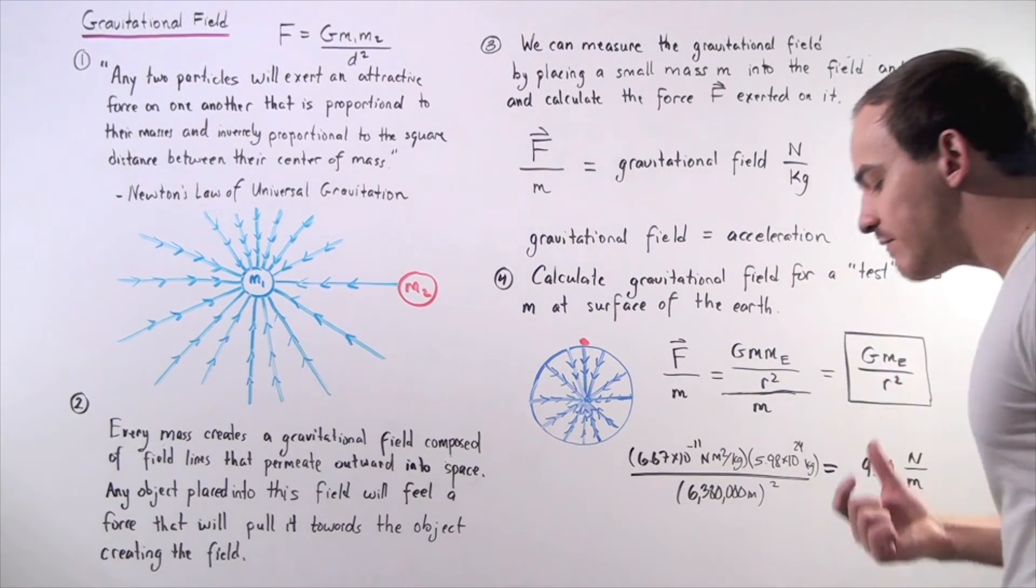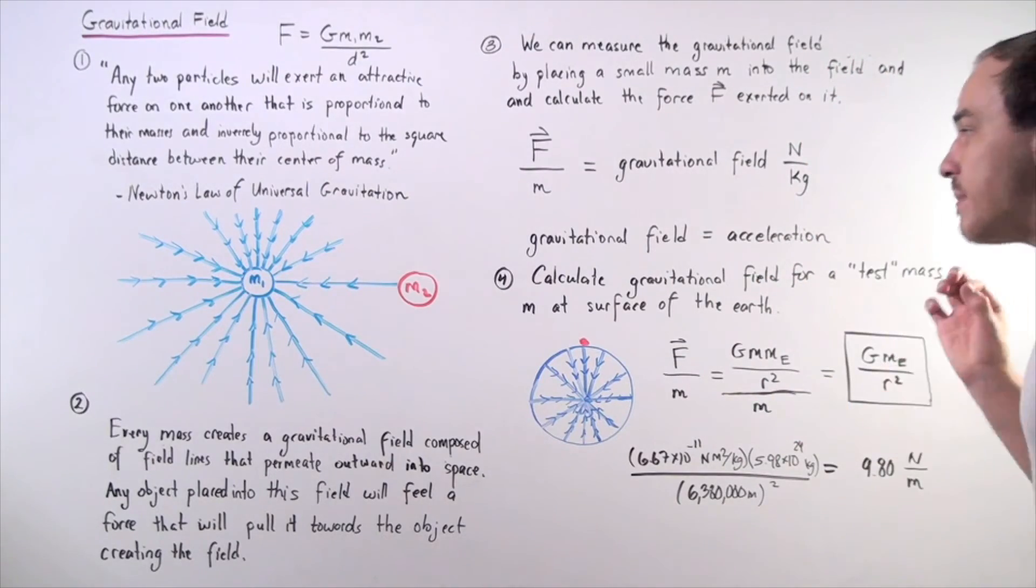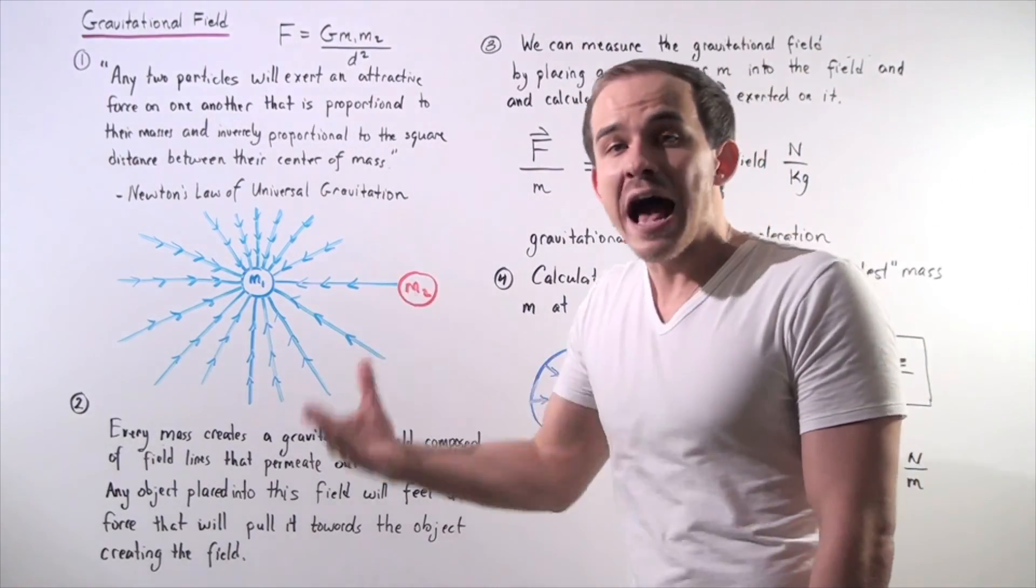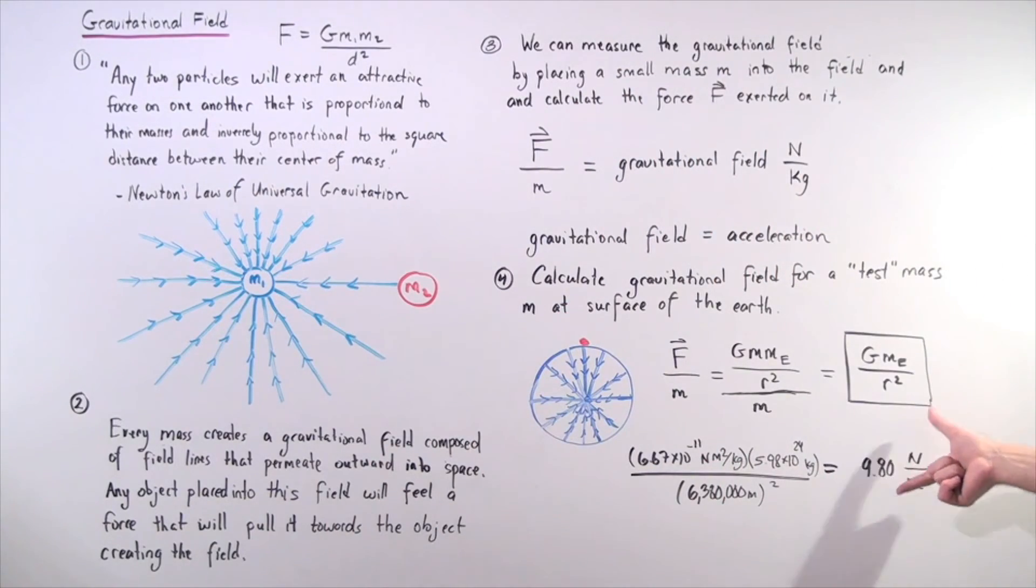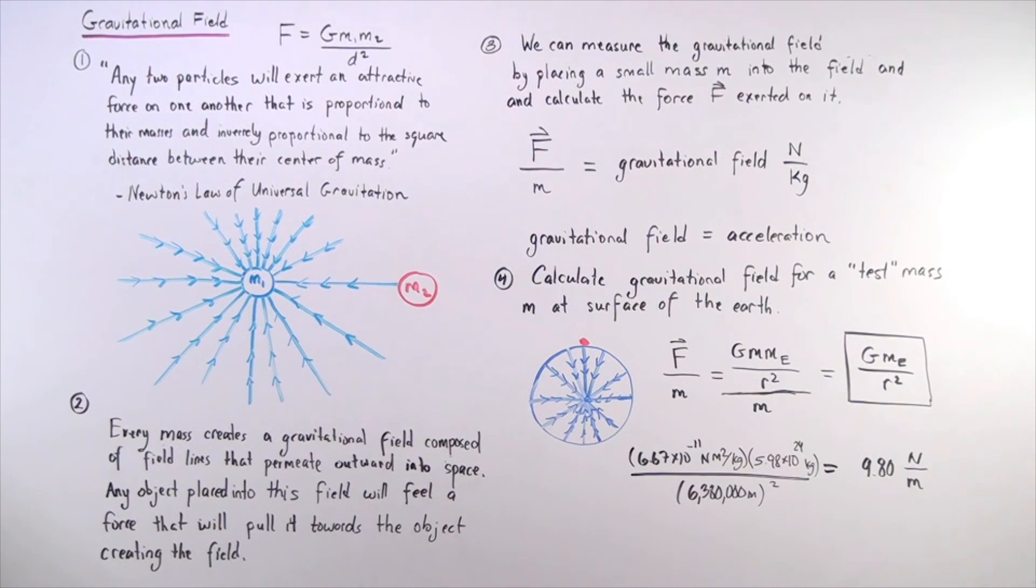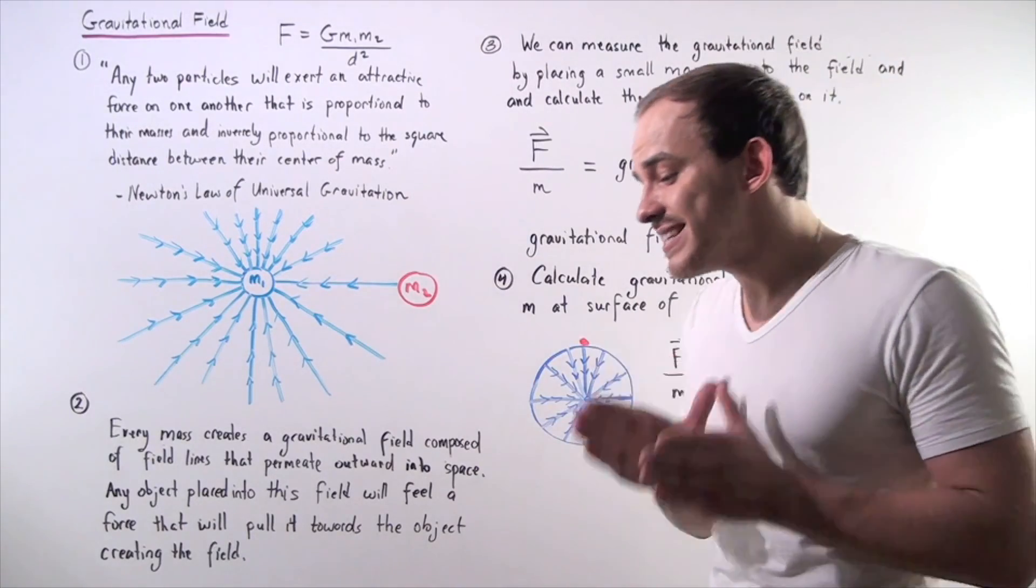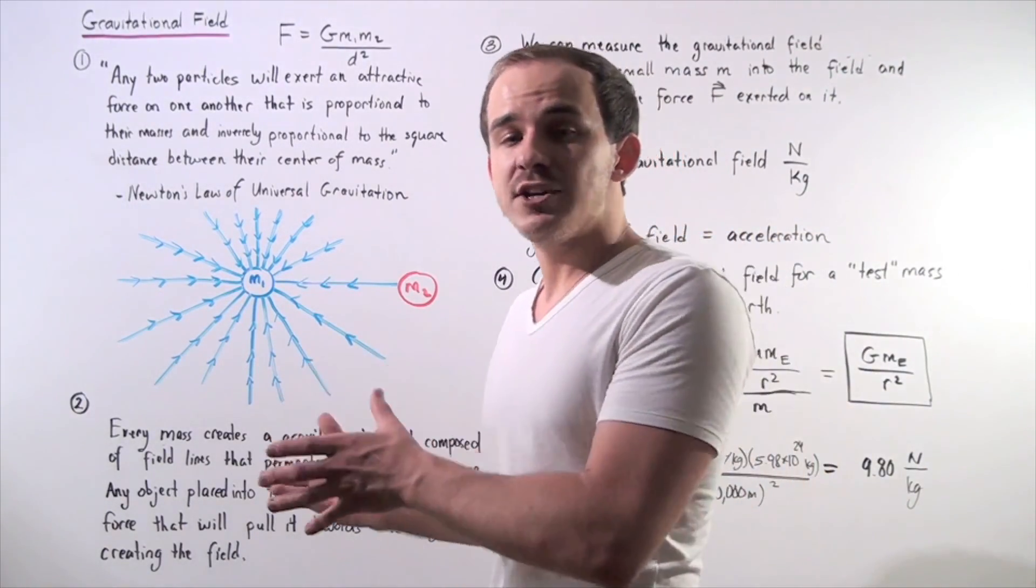And we get approximately 9.8 Newtons per meter. So, this is the value of our gravitational field at the surface of the Earth. So, every single mass, regardless of what the value of that mass is, has the following magnitude of field. And this is equivalent to its acceleration, which is given in 9.8 meters per second squared. But these units are exactly identical to, this actually should be kilogram. These units are identical to meters per second squared. So, the gravitational field is exactly the same thing as our gravitational acceleration.